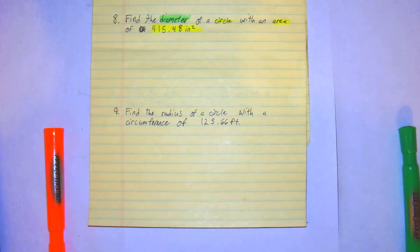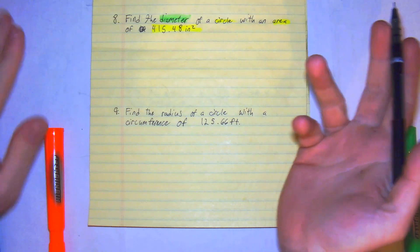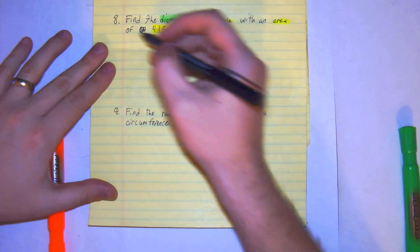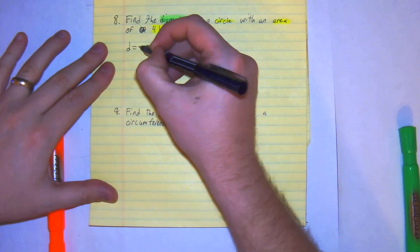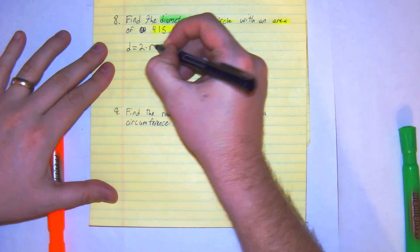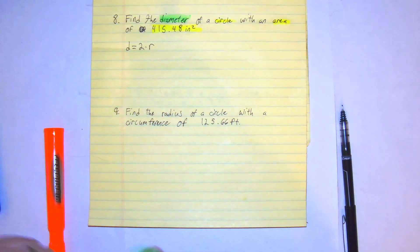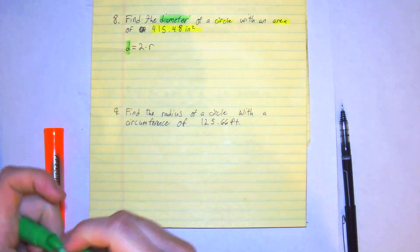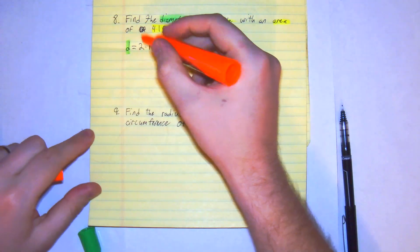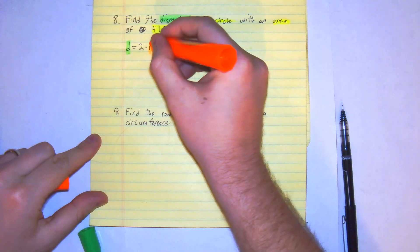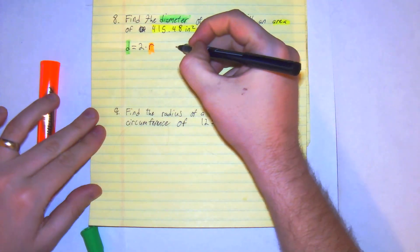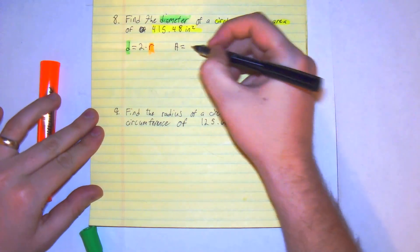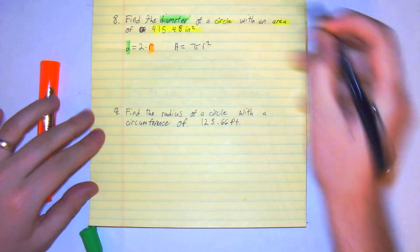So the way this is going to work is we have to work backwards and double it. Diameter equals 2 times r. We know that. So we have to first work backwards and find the radius to do that. We're given the area formula of a circle: A equals πr².